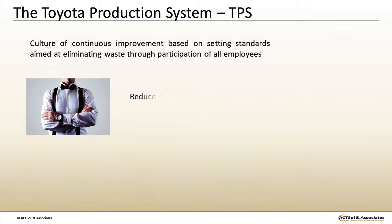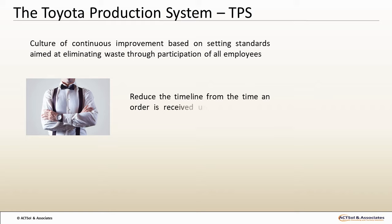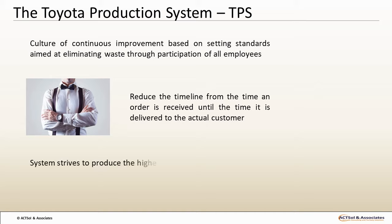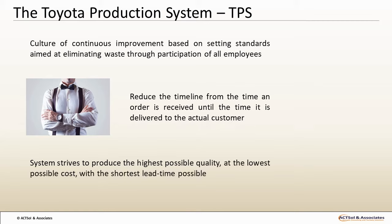This philosophy of Toyota embodies a manufacturing culture of continuous improvement based on setting standards aimed at eliminating waste through participation of all employees. The goal of the system is to reduce the timeline from the time an order is received until the time it is delivered to the actual customer. Ideally, the system strives to produce the highest possible quality at the lowest possible cost with the shortest lead time possible. The TPS is based on two main pillars: JIT and Jidoka.